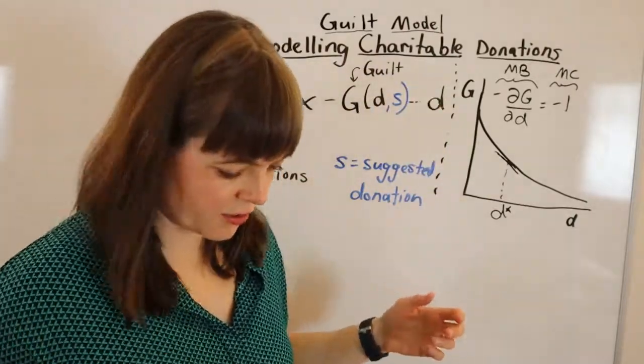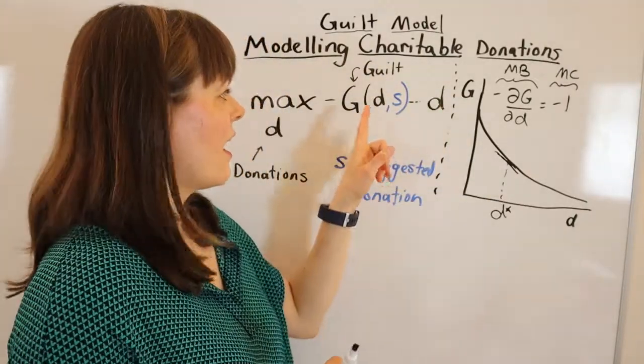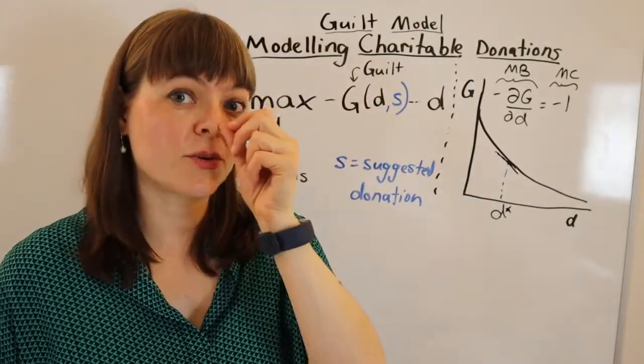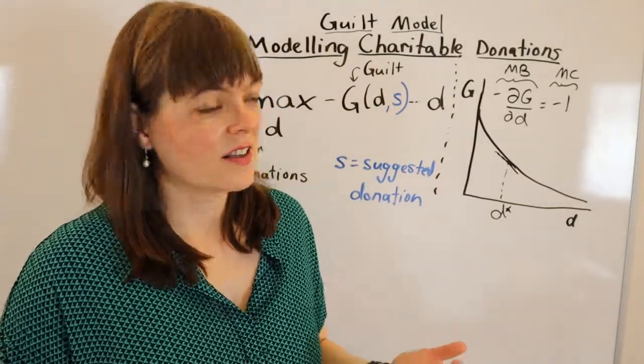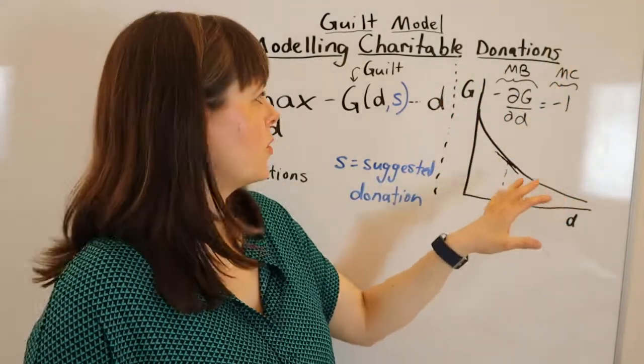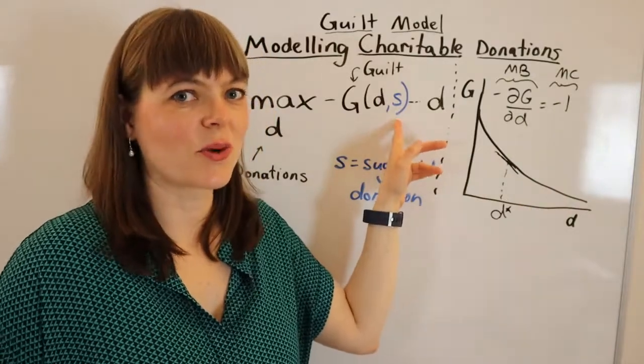So here, the level of guilt you feel depends on how much you give and particularly how much you give relative to a suggested donation. So how might you modify this particular graph to incorporate the suggested donation?